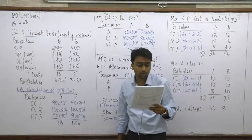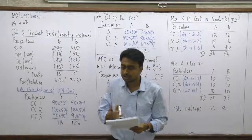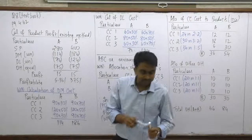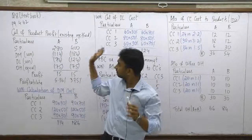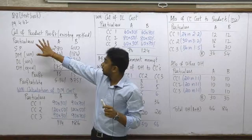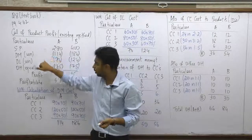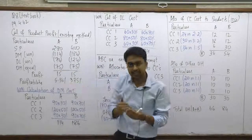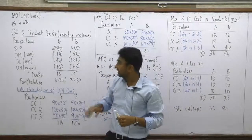Parts 2 and 3 are analytical and theoretical. Let's first focus on the existing method. In the solution, we start from selling price and subtract all costs. We make a table with selling price first, then all direct costs, and then allocate overheads equally — that is the first method. However, DM and DL come through working notes.